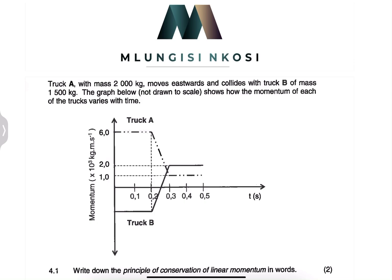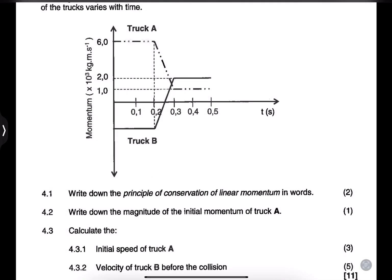This is a graph of momentum against time. Let me zoom into that graph. We've got the momentum of the two trucks — Truck A shows the momentum before the collision. That means the collision took place at 0.2 seconds from the start.